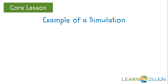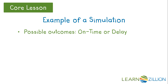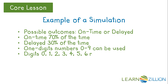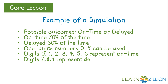There are two possible outcomes: either the flight is on-time or it is delayed. An on-time flight happens 70% of the time. One-digit numbers can be used. The digits 0 through 9 represent 10 different outcomes. 70% of 10 is 7, so we need to use 7 digits to represent an on-time flight.